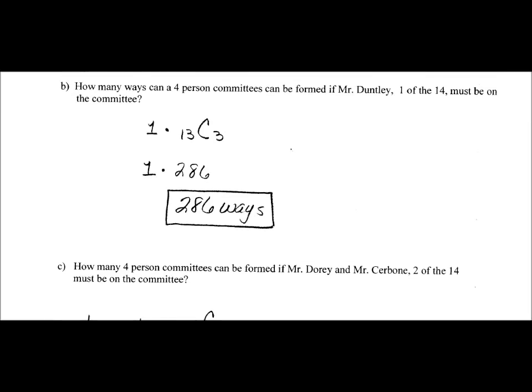Part B says, how many ways can a four-person committee be formed if Mr. Duntley, who is one of the 14, must be on the committee? There's four slots. The first one must go to Mr. Duntley. There's three remaining slots and 13 people left to choose from. 13C3 is for the remaining three slots, so 1 times 13C3 is 286.